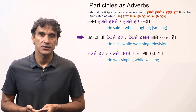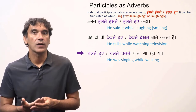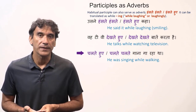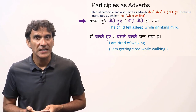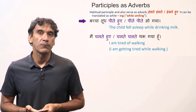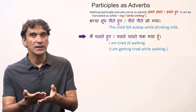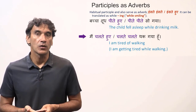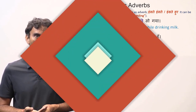'Chalte hui woh gaana ga raha tha' and 'chalte chalte woh gaana ga raha tha' both mean 'he was singing while walking'. 'Bachcha dudh peete hui so gaya' and 'bachcha dudh peete peete so gaya' both mean 'the child fell asleep while drinking milk'. 'Main chalte chalte thak gaya hoon' means 'I am tired of walking' or 'I got tired while walking'.